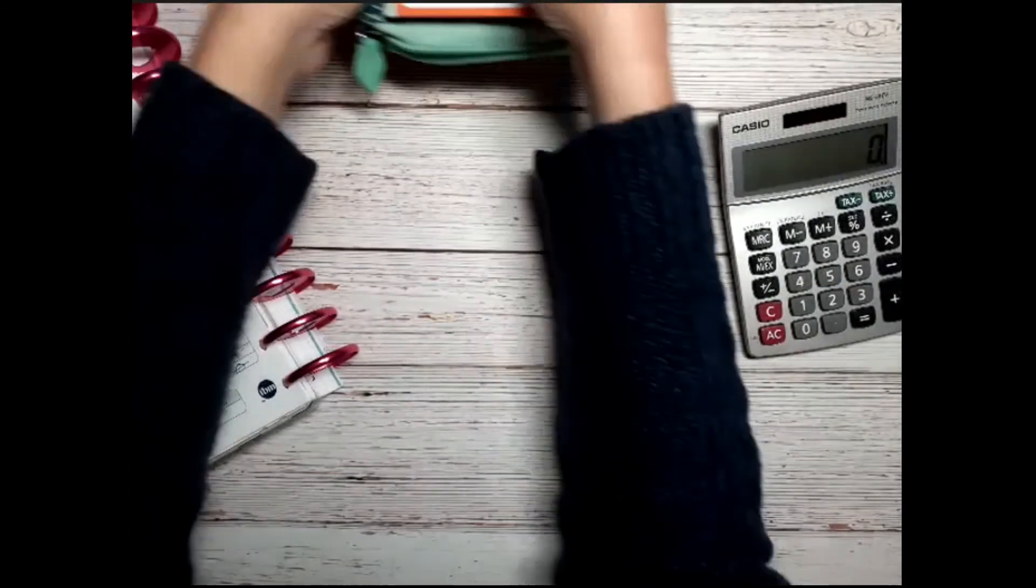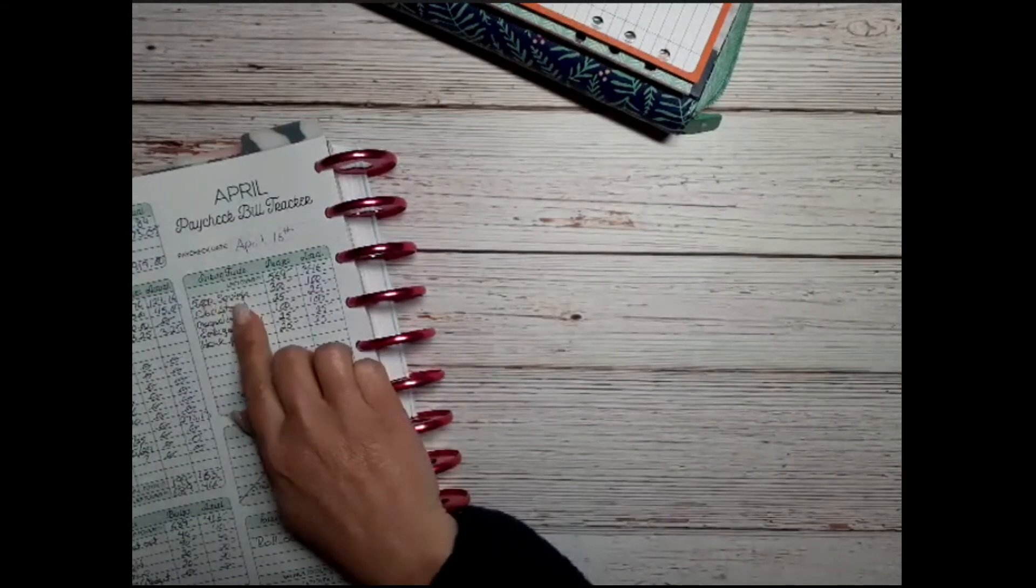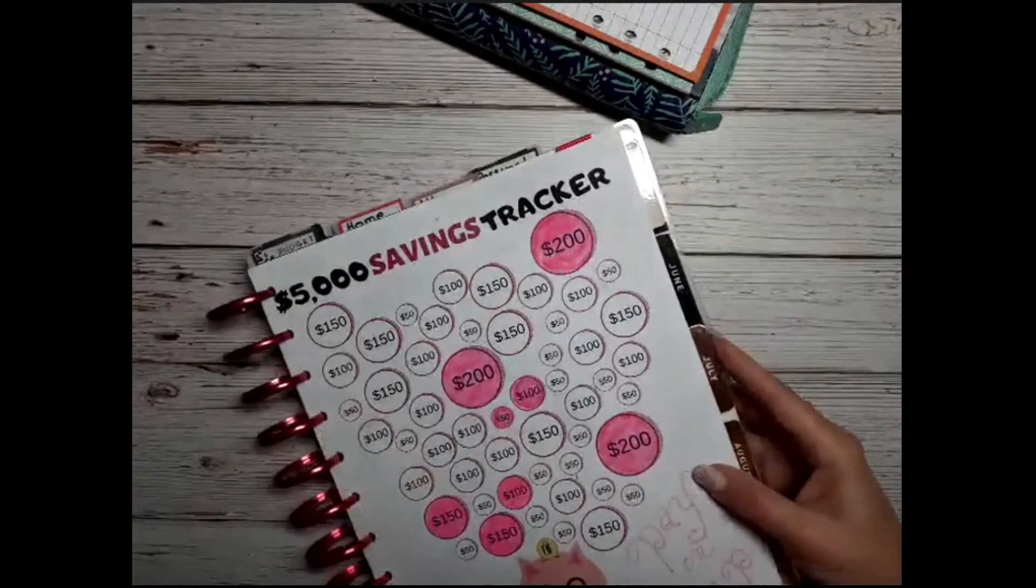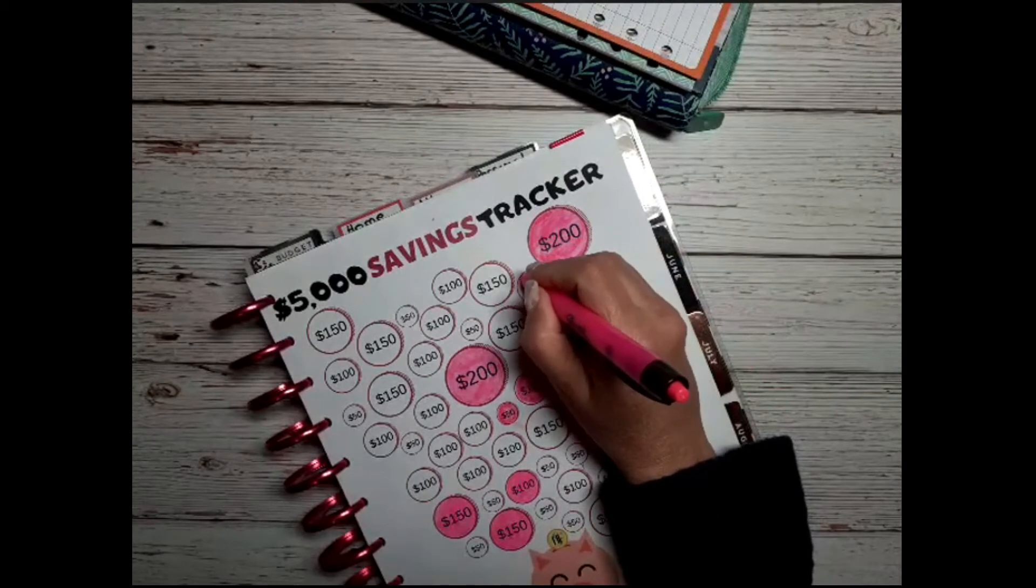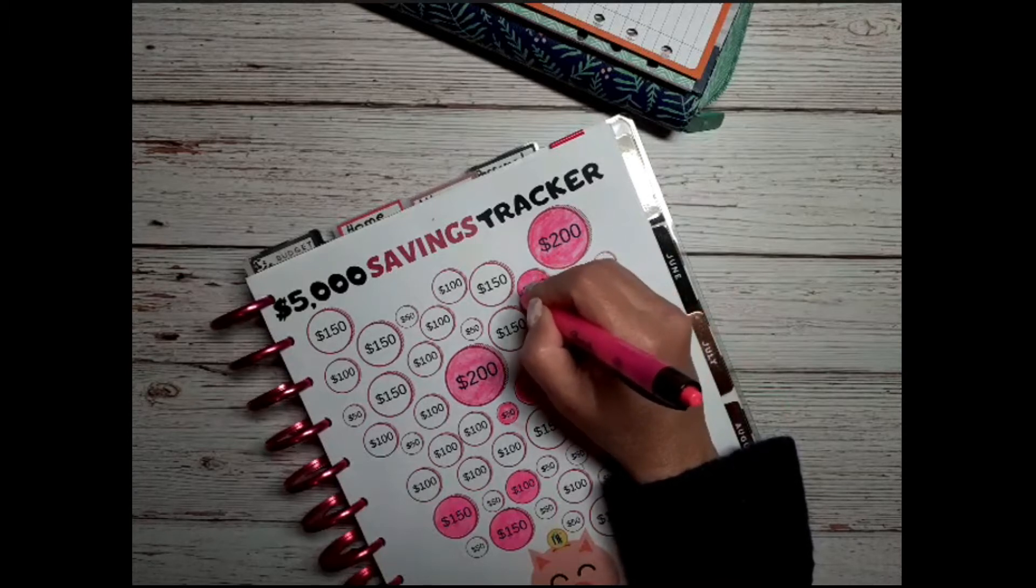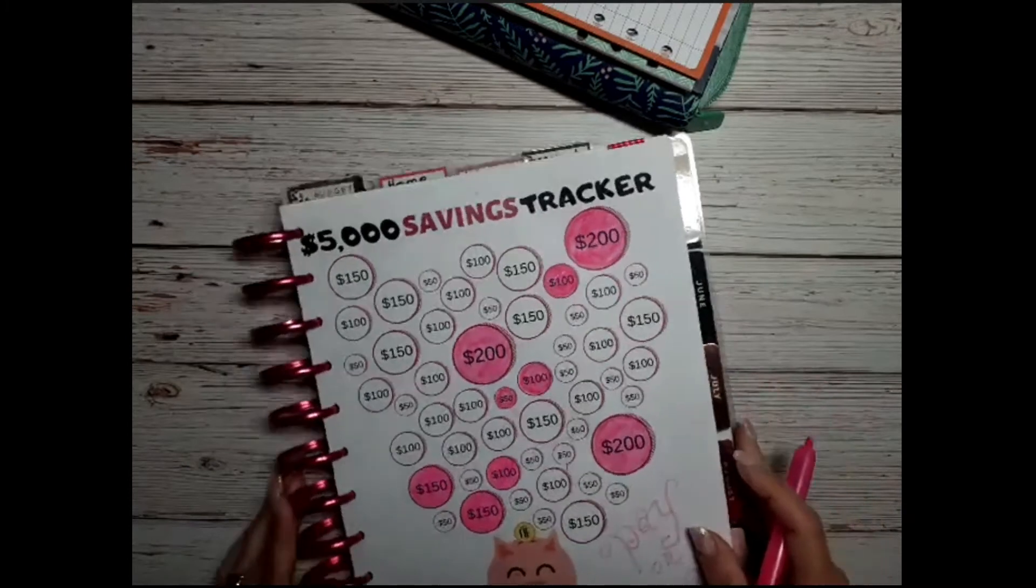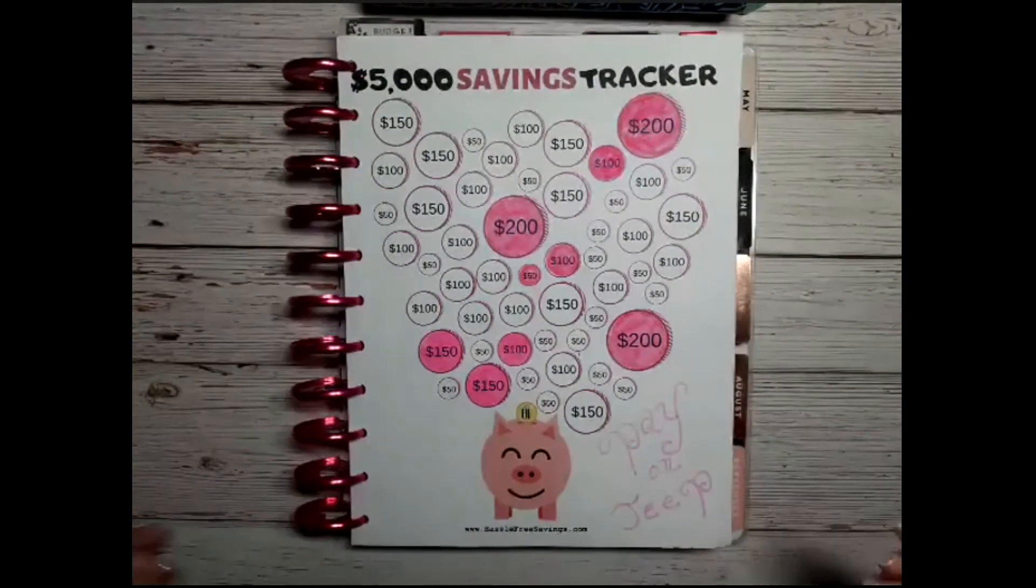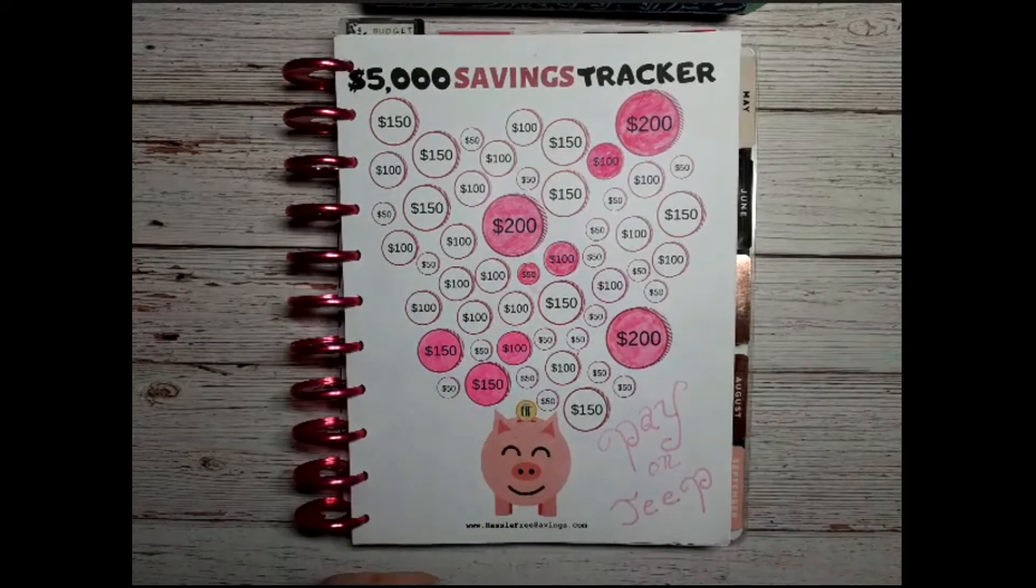So I get to put $100 in my $5,000 savings challenge, so I get to color in a circle here. Let's do this one over here. Alright, I don't think you guys ever got to see that whole thing before. So I was holding my phone and I think I only came up here with a cell, and it wrote 'pay on my Jeep.' This normally sits on my bulletin board at work, keeps me motivated.